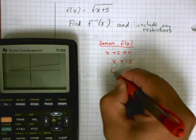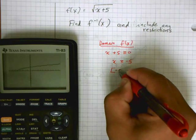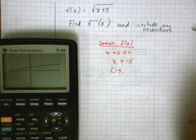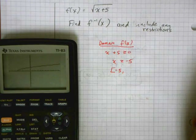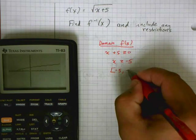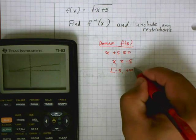In other words, the domain is from negative 5 to positive infinity.